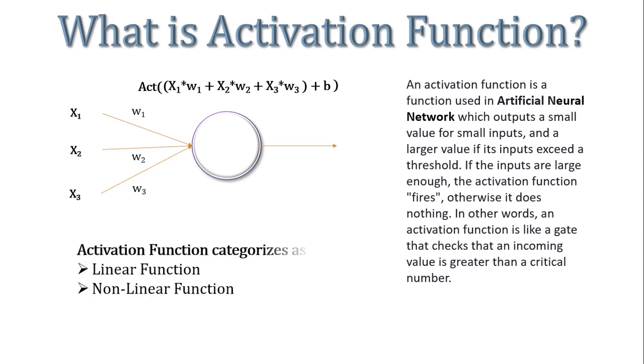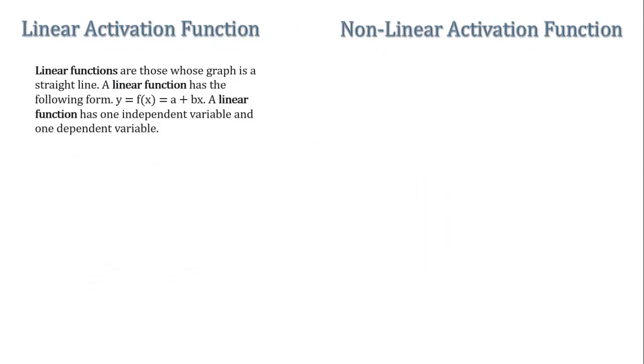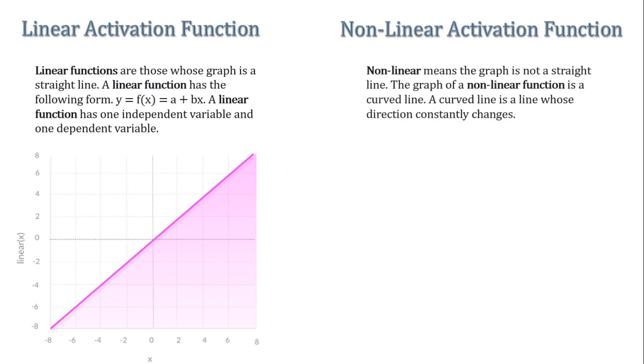So we have two types of activation function: one is linear and other is nonlinear activation function. We already know that linear functions are the equation which graph a straight line in an xy plane. So the output of the function will not be confined between any range. Whereas nonlinear function means the graph is not a straight line. Instead it is a curved line or some range.